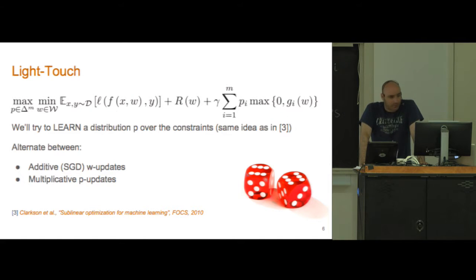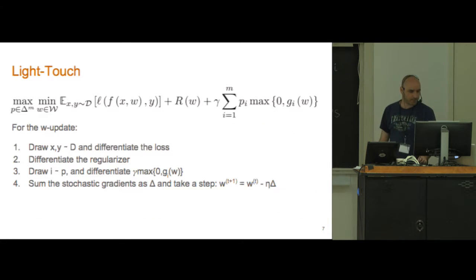Now we have a saddle point problem. We're going to jointly optimize over w and p by performing additive updates on the w's, the weight vectors, and multiplicative updates on the p's. We're just going to alternate between these two things.